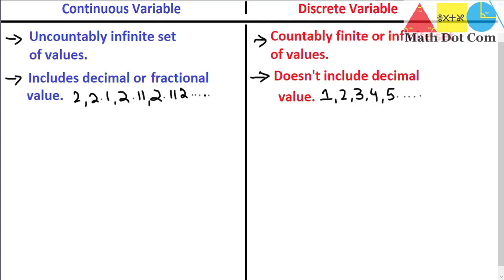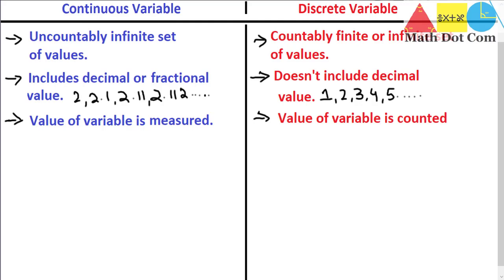The next difference is that a continuous variable is usually measured using some scale. We cannot count the value of a continuous variable because there is an infinite range of possible values, making it impossible to count. So we have to measure the values. While in the case of a discrete variable, we can count the values because they are finite, or even if infinite, they are countable. So we usually count discrete variable values and measure continuous variable values.